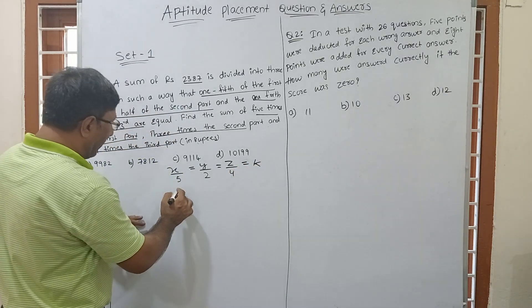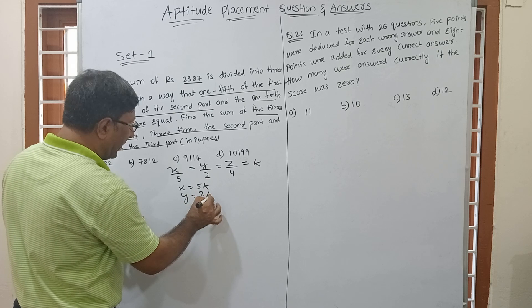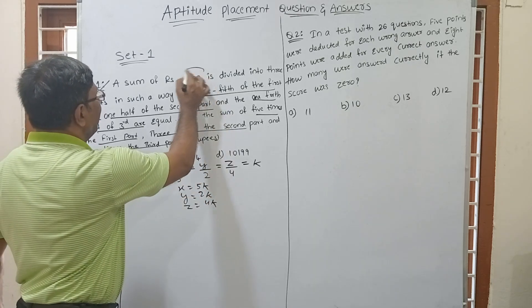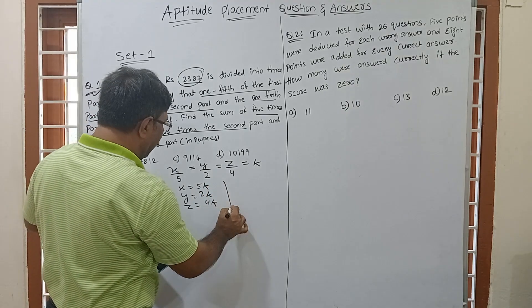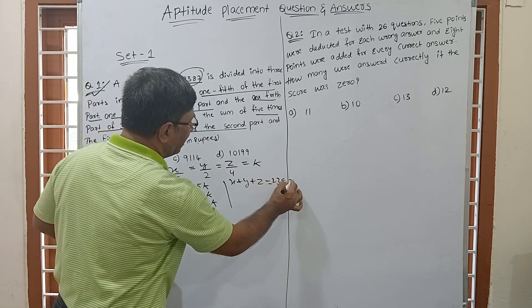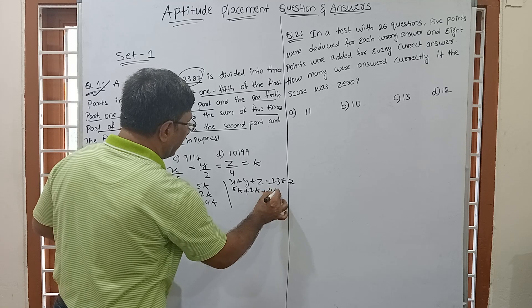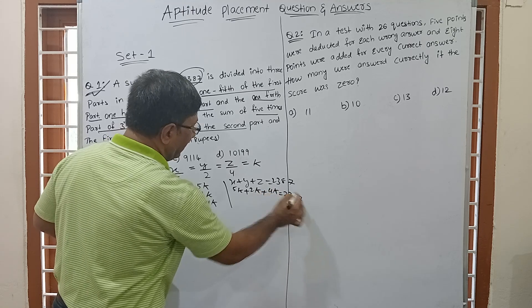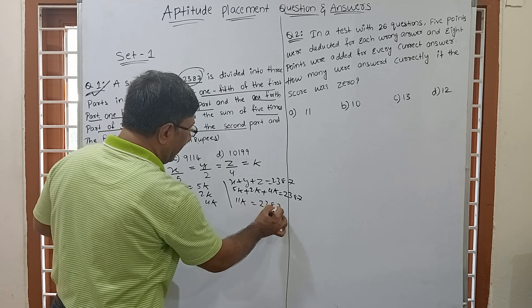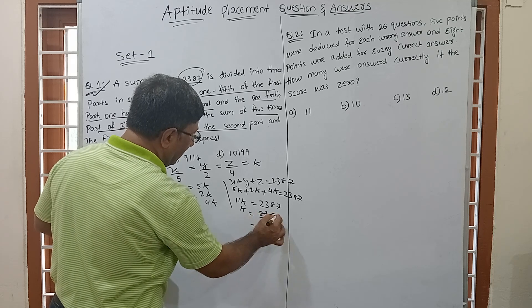If x/5 = y/2 = z/4 = k, then x = 5k, y = 2k, and z = 4k. Now, the sum of all three parts is given as 2387. So x + y + z = 5k + 2k + 4k = 11k = 2387. Therefore k = 2387 / 11 = 217.